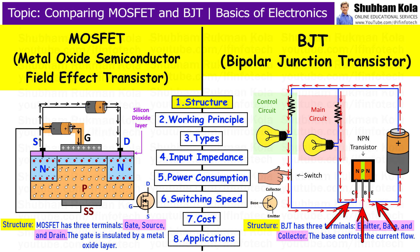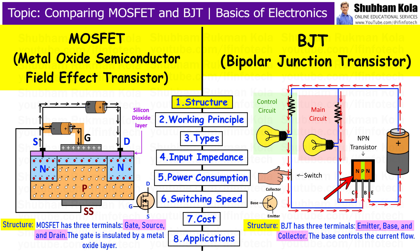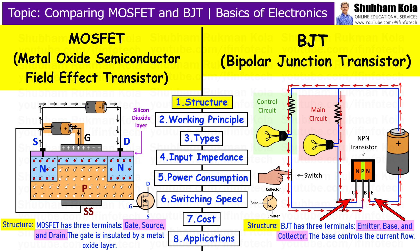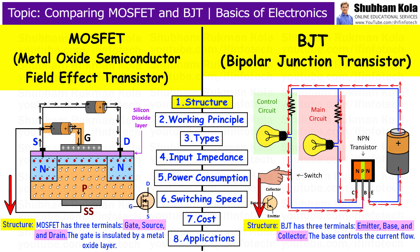BJT has three terminals as well: emitter, base, and collector. BJT relies on the movement of charge carriers, i.e. electrons and holes through the base region, to control the current flow between the emitter and collector. Unlike MOSFETs, BJT requires a continuous current at the base to operate. This difference in structure leads to differences in how they operate and how they are used in circuits.